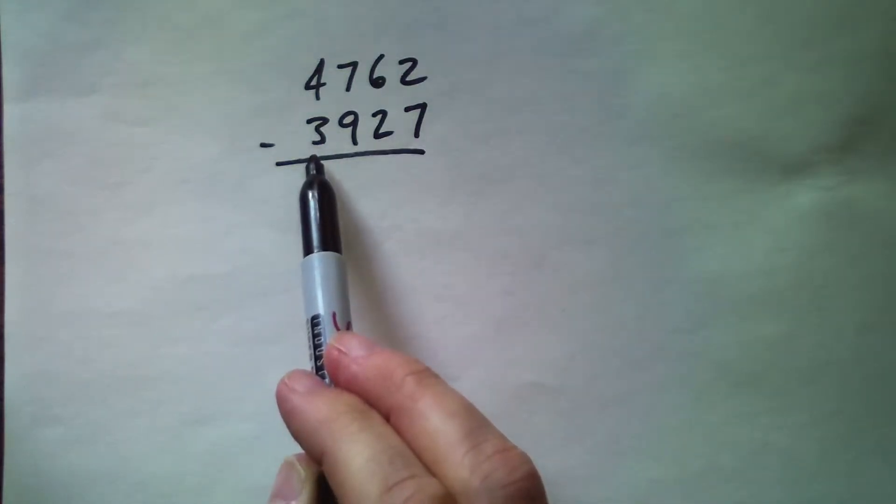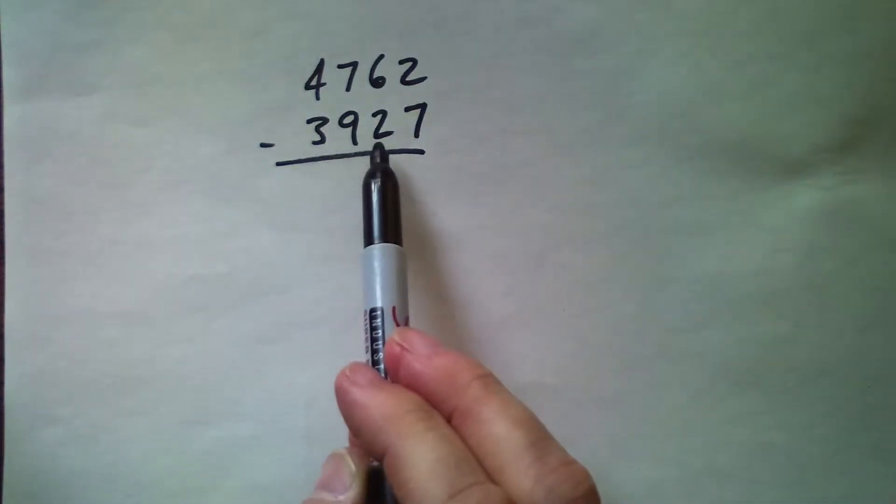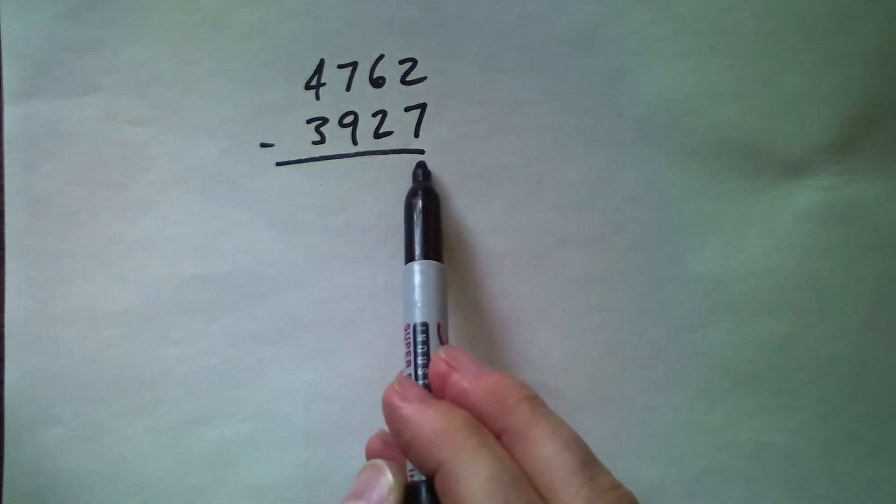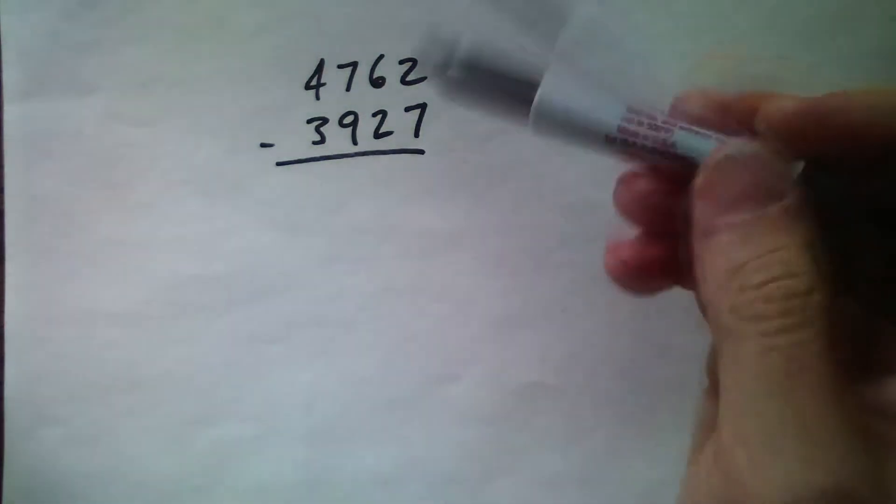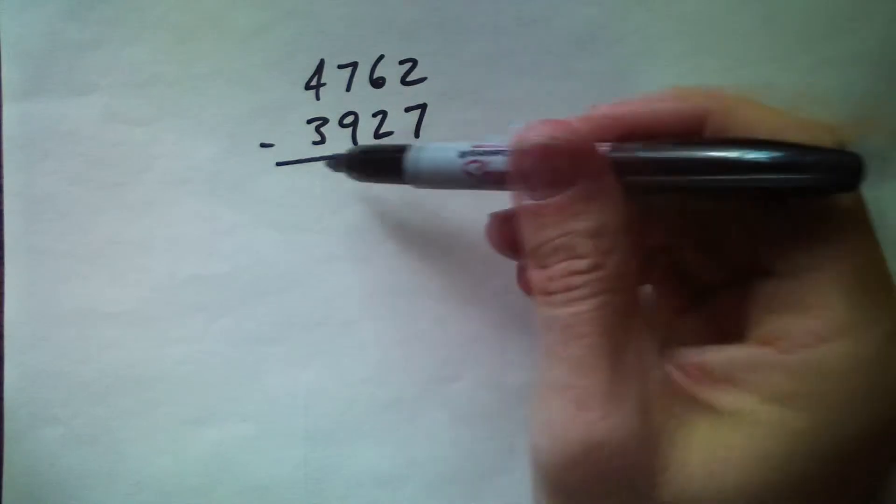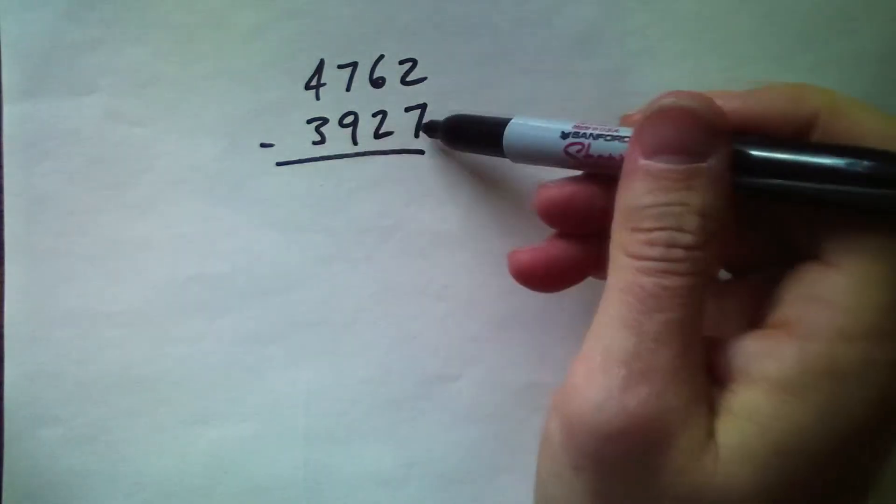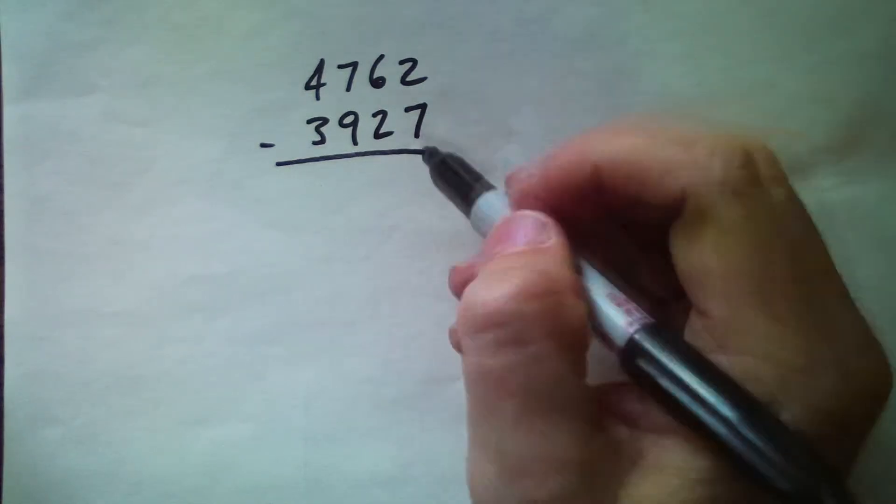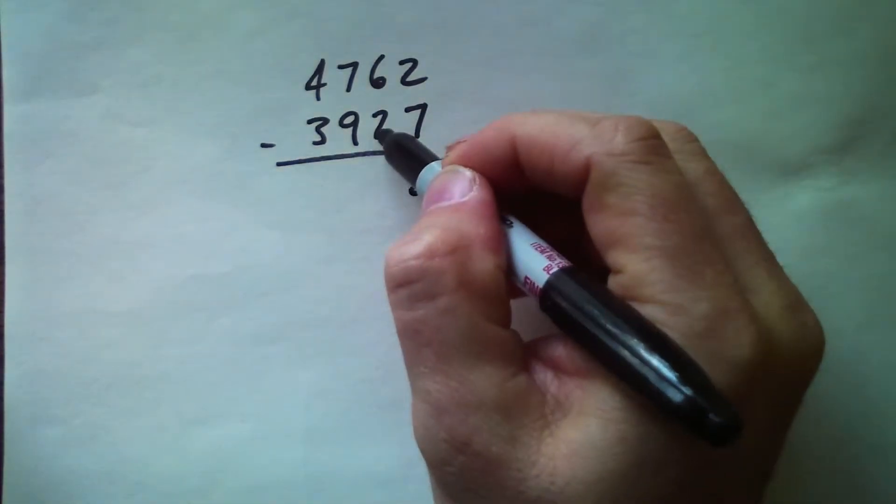So we do that individually. I'm sorry, 9999. So the complement of 7 with respect to 9 is 2, the complement of 2 with respect to 9 is 7, complement of 9 with respect to 9 is 0, the complement of 3 with respect to 9 is 6.